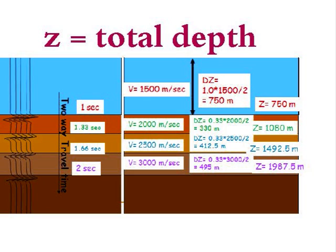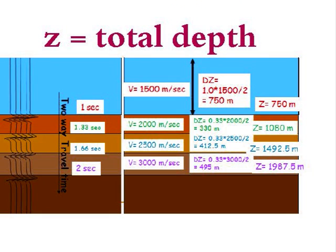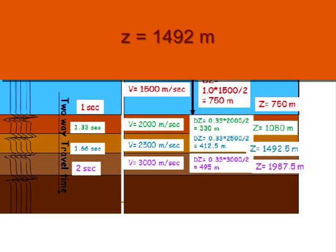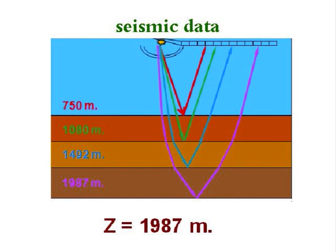Second zone, V equals 2,000 meters per second. DZ equals 0.33 seconds times 2,000 divided by 2 equals 330 meters. Z equals 1,080 meters. Third zone, V equals 2,500 meters per second. DZ equals 0.33 seconds times 2,500 divided by 2 equals 412.5 meters. Z equals 1,492 meters. Fourth zone, V equals 3,000 meters per second. DZ equals 0.33 seconds times 3,000 divided by 2 equals 495 meters. And Z equals 1,987 meters. So we get a total basement depth of 1,987 meters.